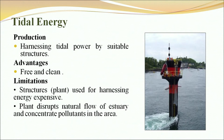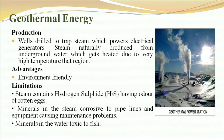Next is tidal energy, produced by harnessing tidal power using suitable structures. Advantage is that it is free and clean. Limitations are that structures used for harnessing energy are expensive, and the plant disrupts the natural flow of estuaries and concentrates pollutants in the area. Next is geothermal energy, produced by wells drilled to trap steam which powers electrical generators; steam is naturally produced from underground water heated due to very high temperatures in that region. Advantage is it is environment-friendly. Limitations are that steam contains hydrogen sulphide with the odour of rotten eggs, minerals in the steam are corrosive to pipelines and equipment causing maintenance problems, and minerals in the water are toxic to fish.